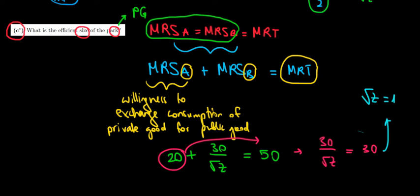And as a result, Z can only be one. So the optimal level of the park size is going to be one meter square. Z is going to be one. So the optimal level for Z is one. And we are done.